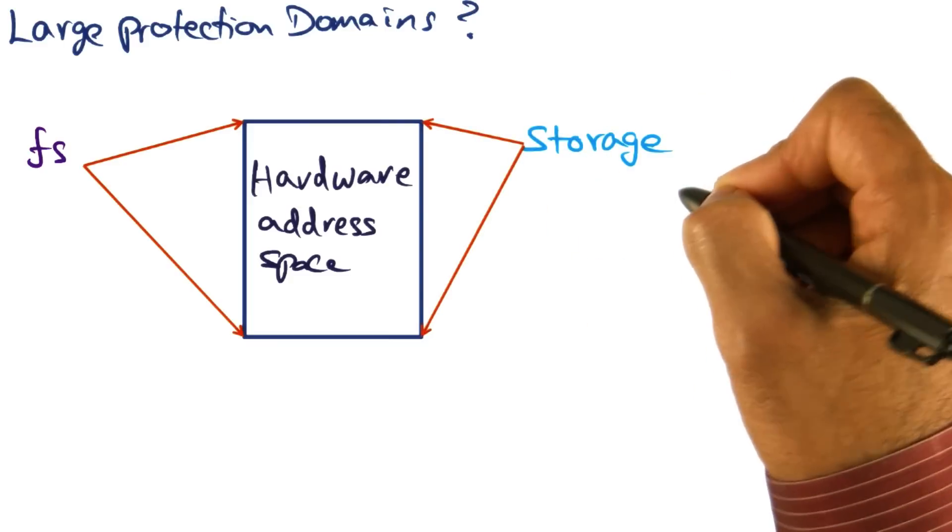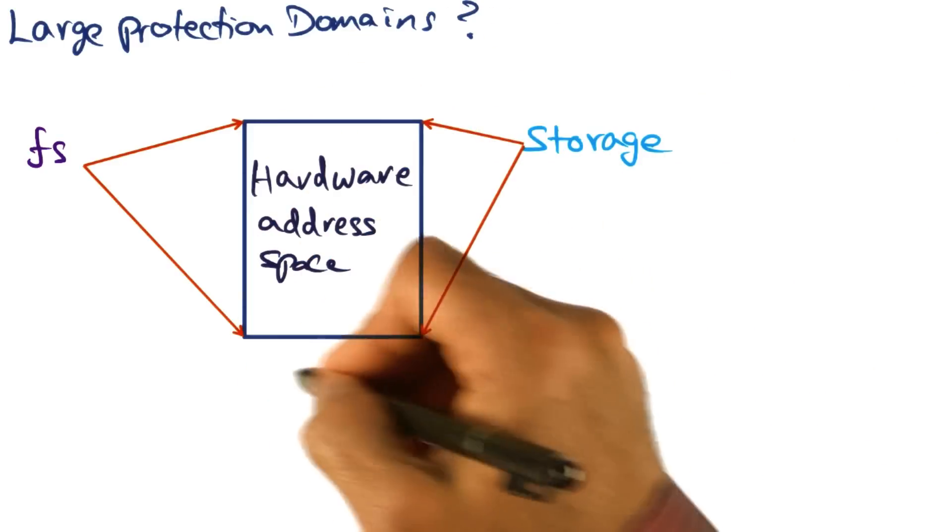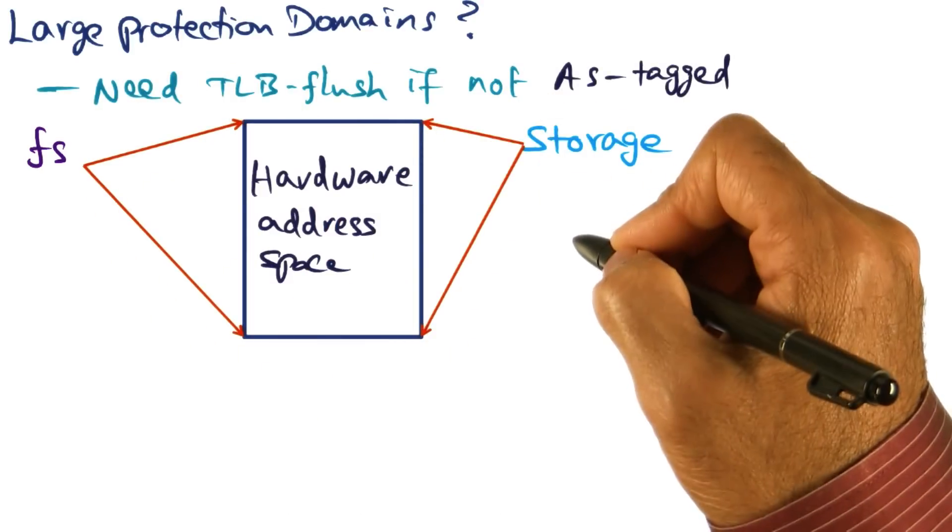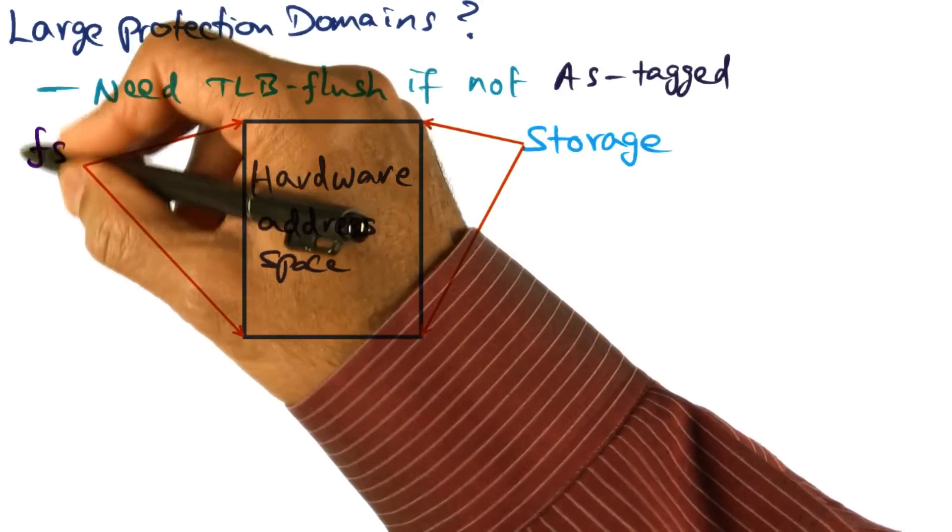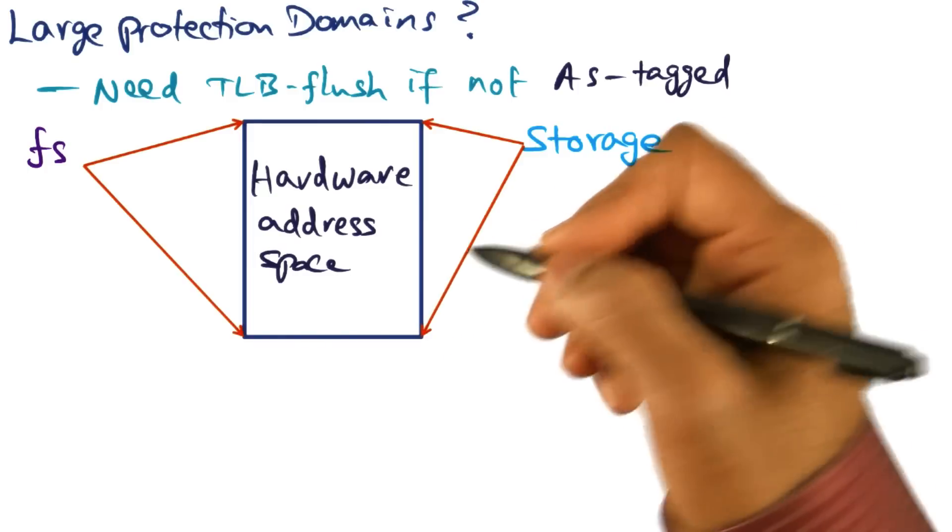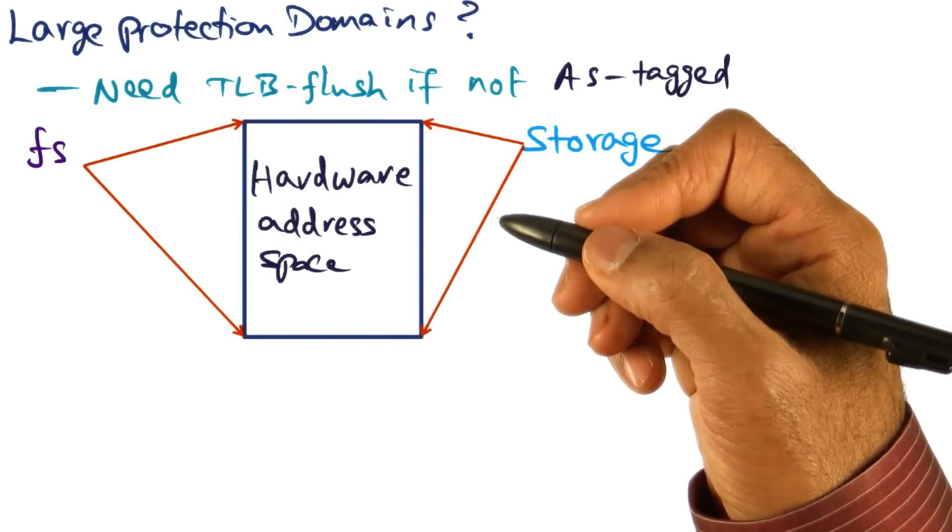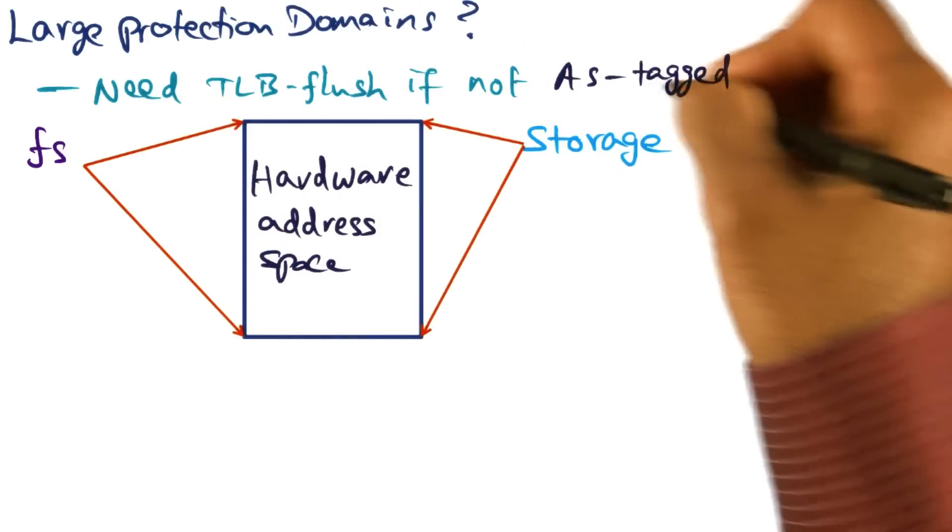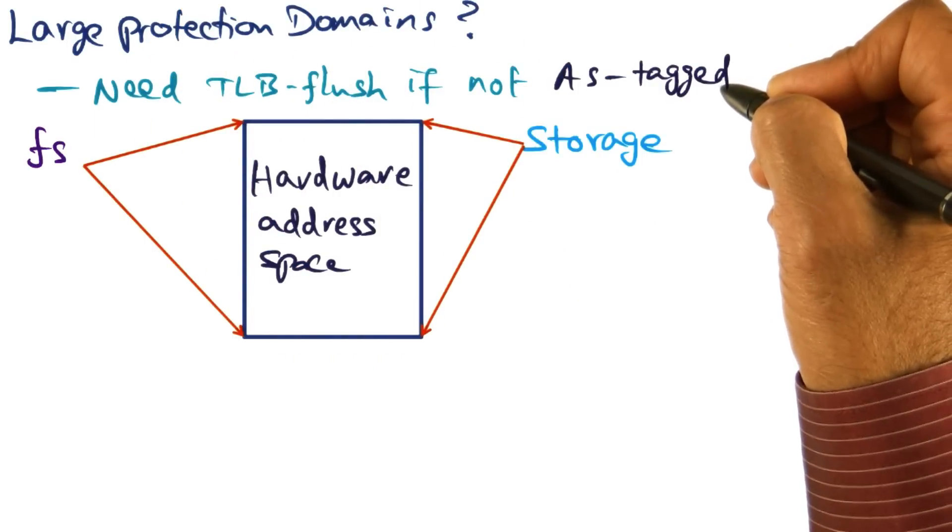Similarly, the code base for the storage module is so big that it may occupy the entire hardware address space. Now, if the protection domains are so large that they pretty much occupy the entire hardware address space, and if the TLB does not support address space tagging, then you have to do a TLB flush on a context switch.